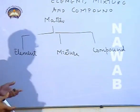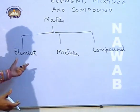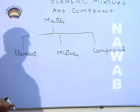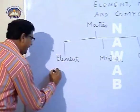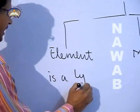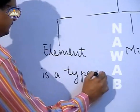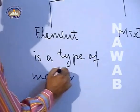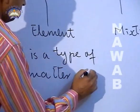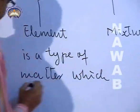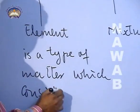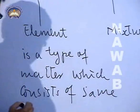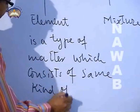Now, how are element, mixture, and compound chemically different from each other? First we will take up the element. Element is a type of matter which consists of same kind of atoms.